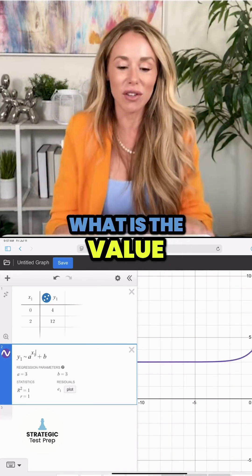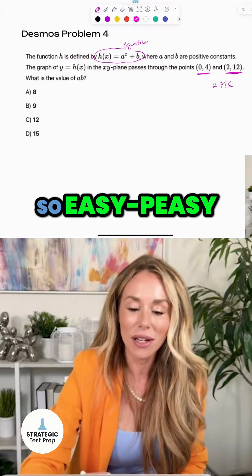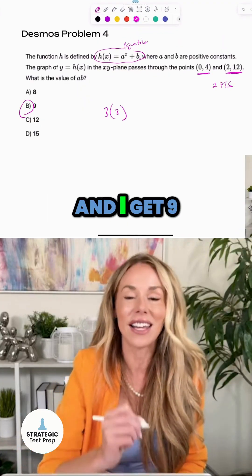They wanted to know what is the value of a times b. Well, the parameters give us a is three and b is three, so easy peasy, I just need to do three times three and I get nine.